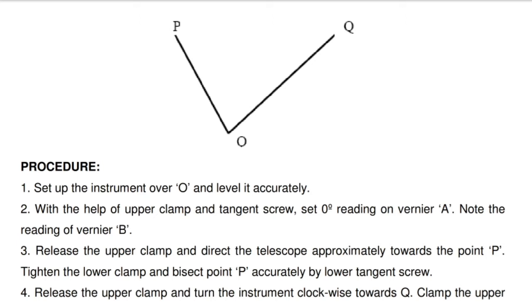Step 3 - Release the upper clamp and direct the telescope approximately toward the point P. Tighten the lower clamp and bisect point P accurately by lower tangent screw.